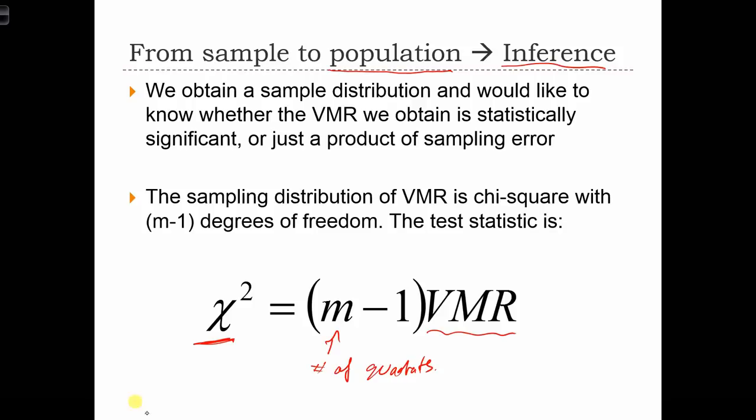What I want to do next is show you why this turns out to be a chi-squared. If you recall from the goodness of fit statistic, chi-squared equals the sum of (OI minus EI) squared over EI, where OI is the observed value and EI is the expected value.